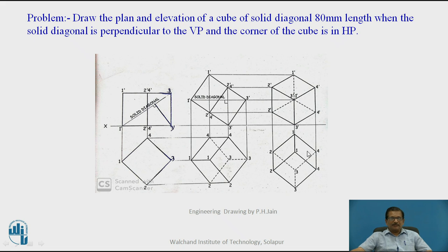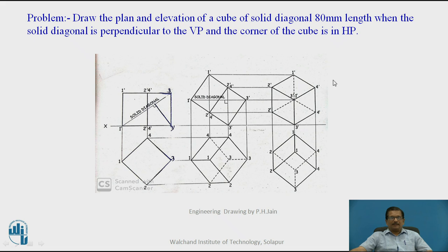This is the bottom face. Project it horizontally to obtain 1-dash, 2-dash, 3-dash, 4-dash of the bottom face. The face visible to the observer is joined as a dark line. As point 1 is away from the observer, edges 1-dash to 1-dash, 2-dash to 4-dash, and 2-dash to 2-dash will be drawn as dotted lines. Other edges are joined as dark lines. This is the final view of the cube whose solid diagonal is 80 mm, perpendicular to VP, with the corner of the base resting on HP.